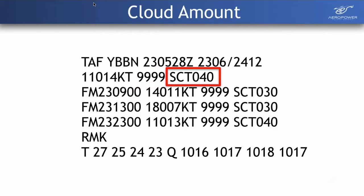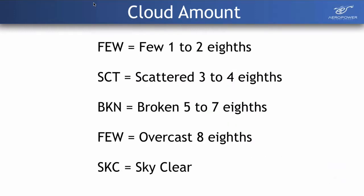Now cloud. The forecast gives us the amount of cloud and the height. Cloud amount used to be represented in eighths — octas. Now we use the terms few, scattered, broken, and overcast. Few is one to two eighths of sky covered, scattered is three to four eighths, broken is when we're starting to get over half the sky covered, and overcast — OVC — means the entire sky is covered at that layer. If you see SKC, it just means sky clear.